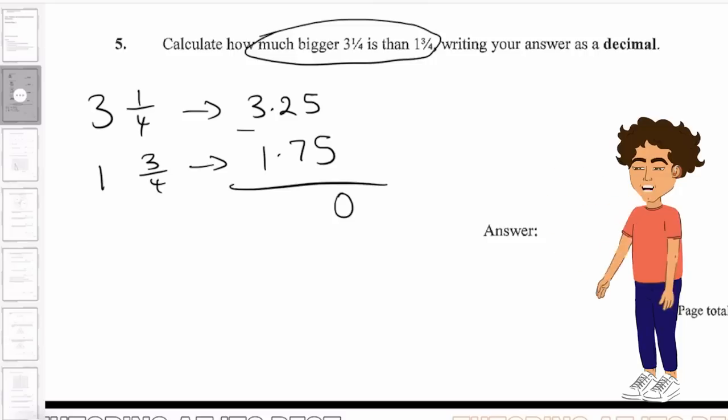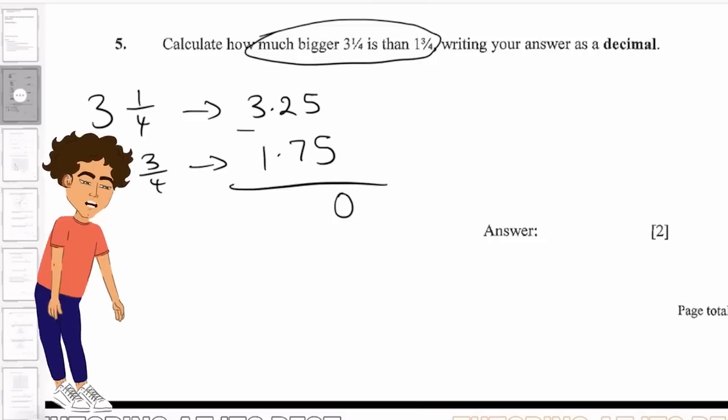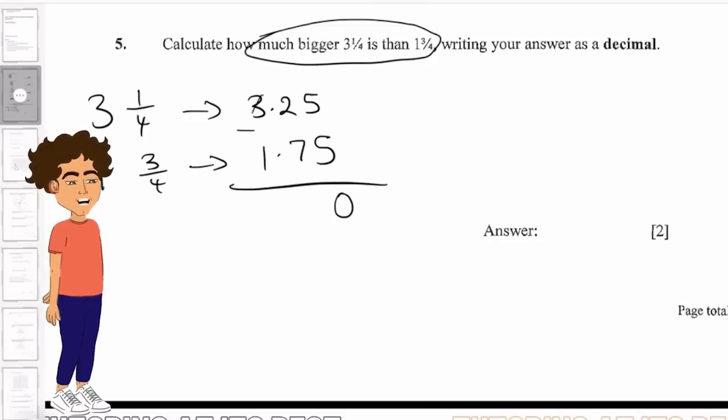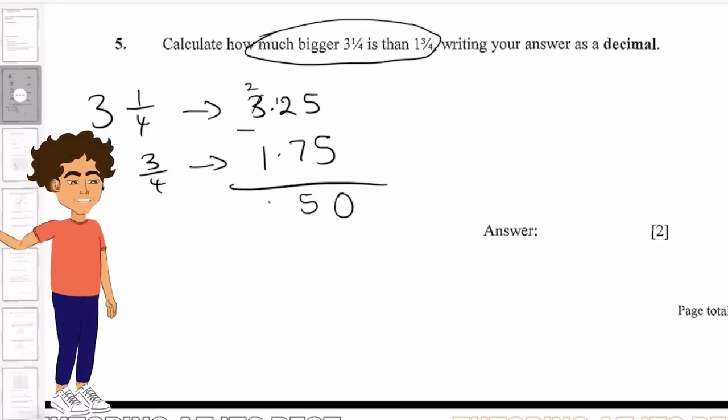We know 5 take away 5 is 0, but we can't do 2 take away 7. So we can borrow from the 3, which gives us 2 and 1. So 12 take away 7 gives us 5, and 2 take away 1 is 1. And don't forget your decimal. And that's our answer, 1.5.